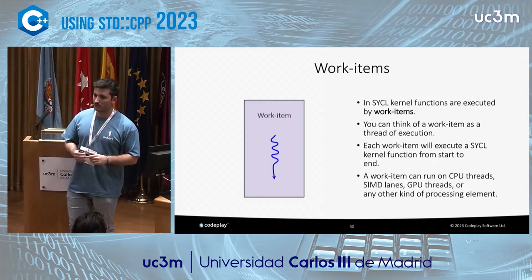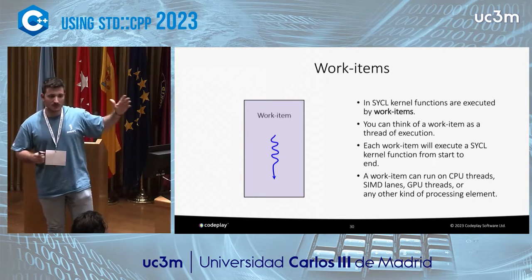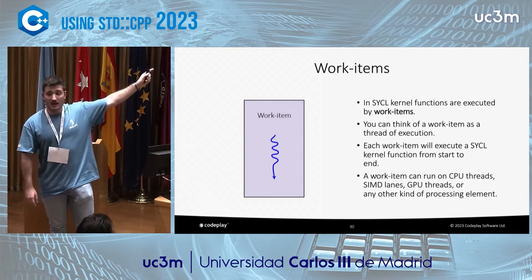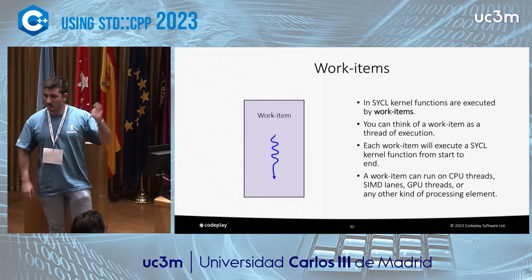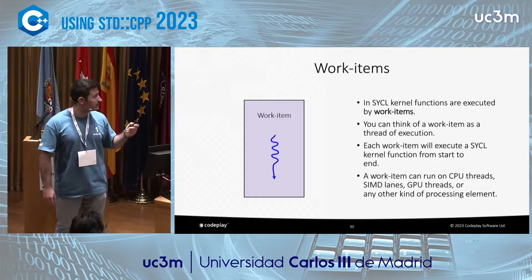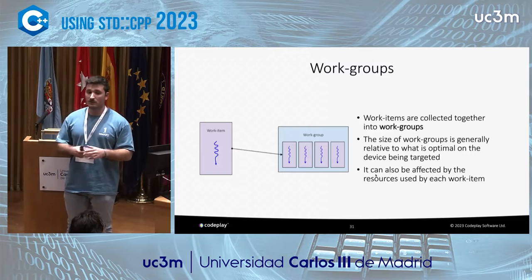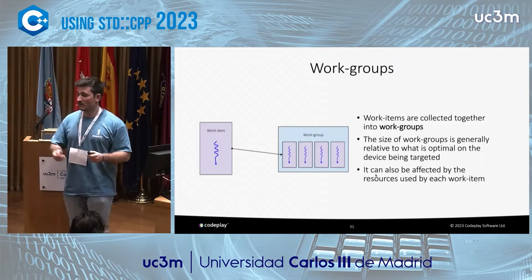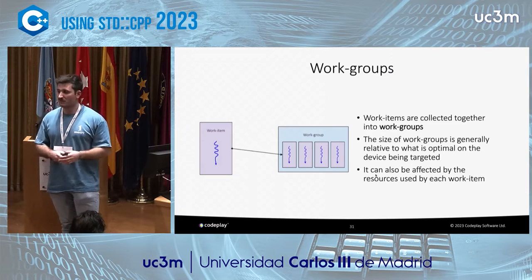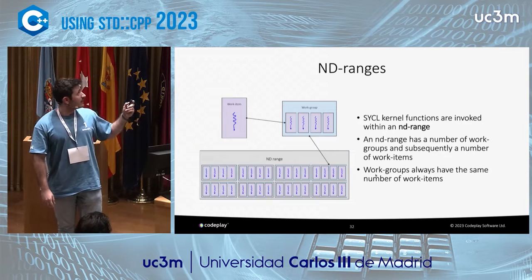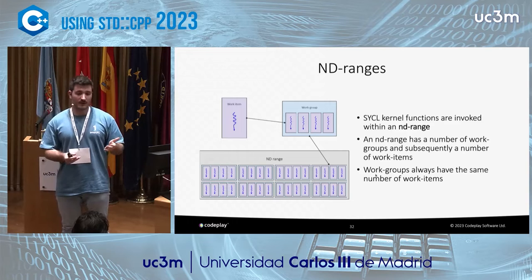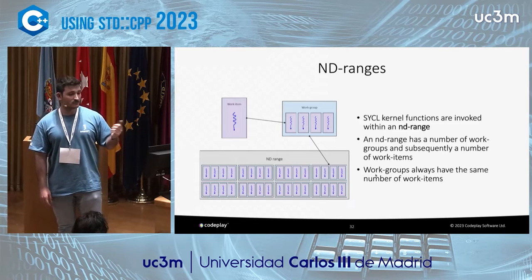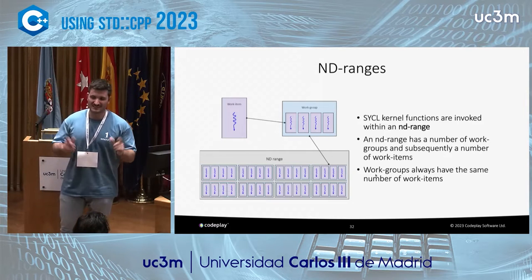Let me introduce the concept of a work item. A work item is basically a thread of execution that executes a SYCL kernel function. Where will it run? It's up to the implementation and the device — we don't care about that. You can group SYCL work items into workgroups to synchronize them and share memory, which matters for high-performance code. Finally, the group of workgroups running on a device is called an ND range. All workgroups in an ND range must be of the same size — the same number of work items.